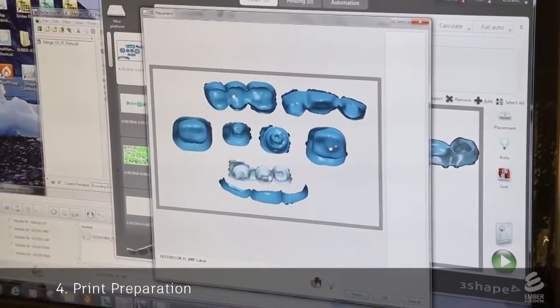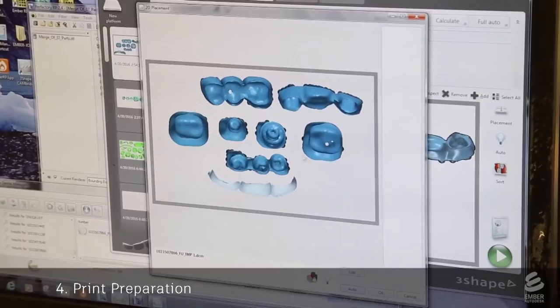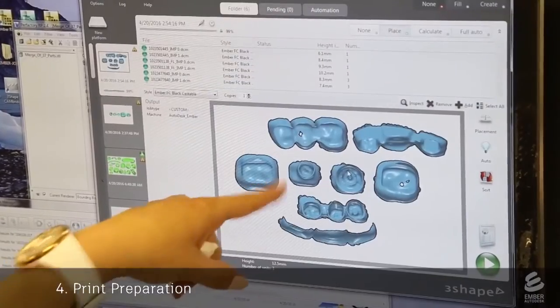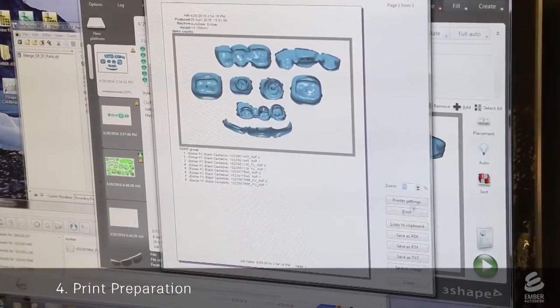This nesting allows many crowns to be printed at once, improving the efficiency of the process. Now this collection of crowns is sent to an Ember printer.